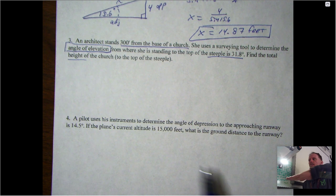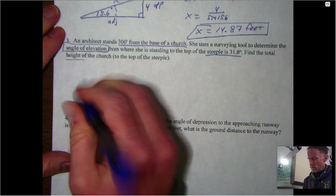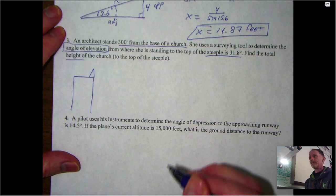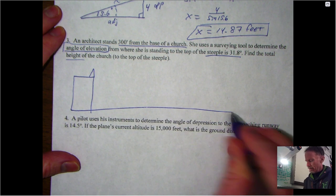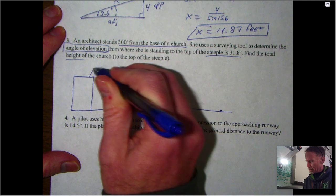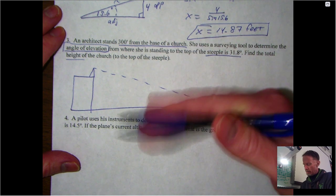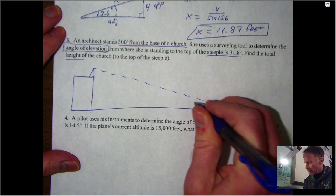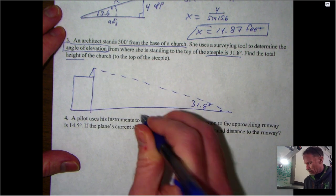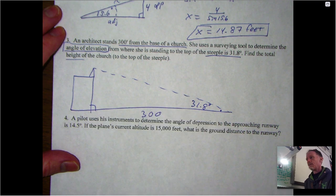When she's standing to the top of the steeple is 31.8 degrees and we want to find the total height. So it's talking about the angle of elevation, which means when you see angle of elevation, you're talking about the ground and the angle moving up from the ground. Easy as that. So if you draw a church - this is going to be lovely - there's my church, my steeple, there's the ground. Our architect is standing over here somewhere and they're sighting up to there.